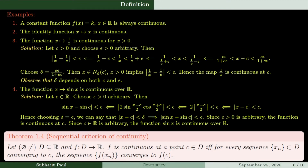Next is the big theorem: the Sequential Criterion of Continuity. The proof of this theorem will be exactly similar to the proof of the sequential criterion for limits. This theorem greatly eases continuity problems. Let D be a nonempty subset of ℝ, and let f be a function from D to ℝ. Then f is continuous at a point c if and only if for every sequence {xₙ} in D converging to c, the sequence {f(xₙ)} converges to f(c). What is the difference from the sequential criterion of limits? In limits, c was required to be a limit point.